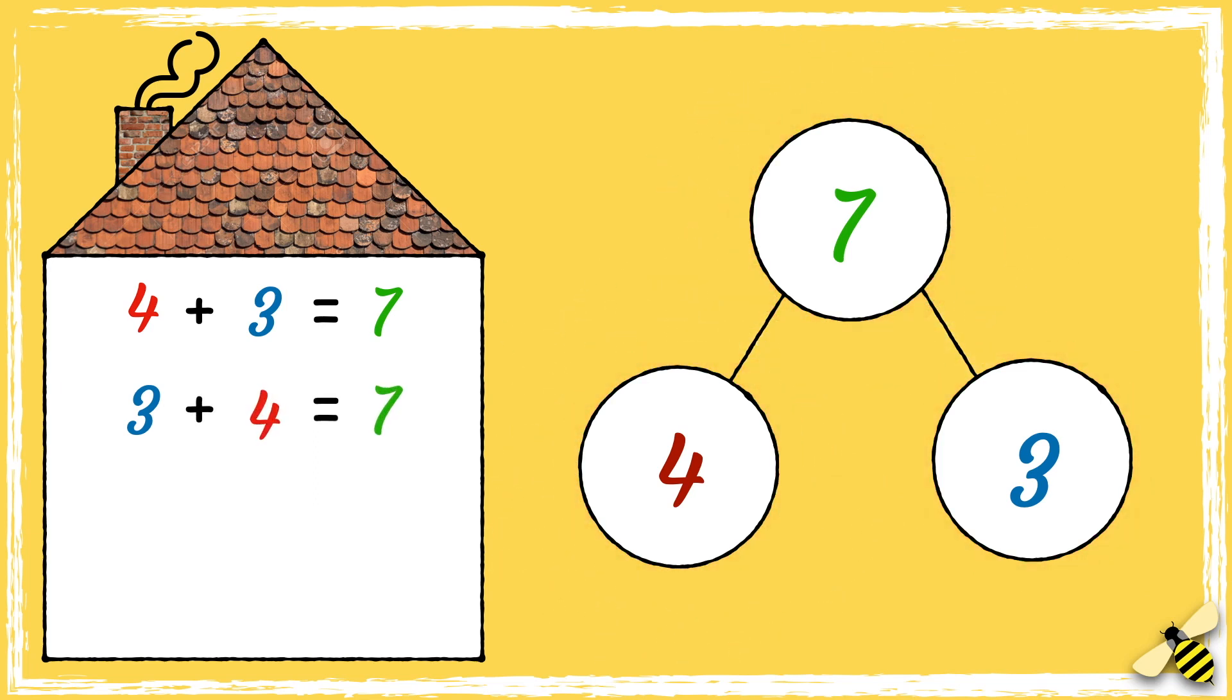We could say that 7 take away 3 equals 4, or that 7 take away 4 equals 3.